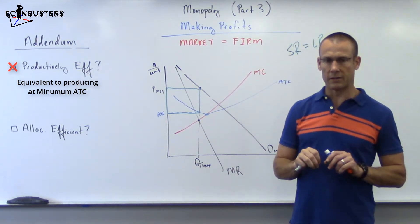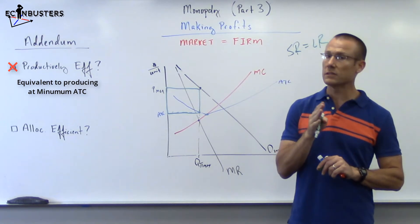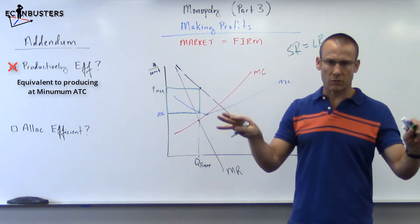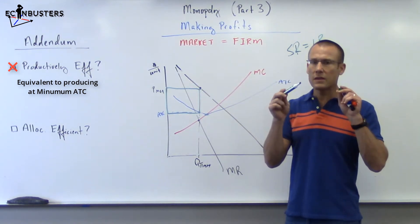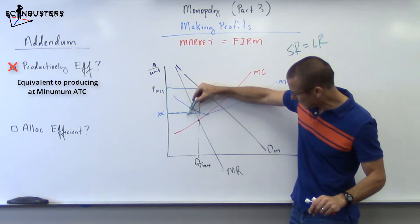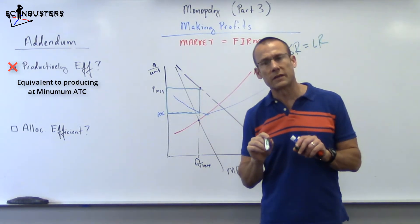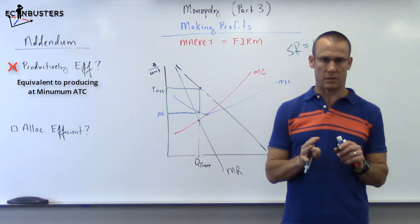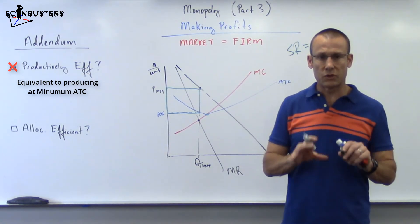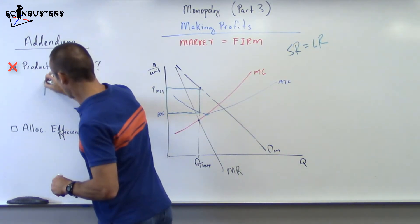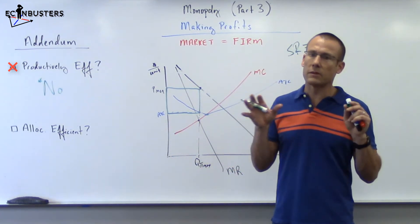Now, a little caveat: is it even possible for a monopolist ever to be productively efficient? The answer is actually yes, but only by the most random of chance. There's nothing in the market driving us there. It would only happen if we drew the ATC line so it hit exactly where MR and MC are intersecting. There's nothing pulling us to being there. So productively efficient — no, with a small asterisk: yes, maybe by random chance, but for the most part a monopoly is not going to be productively efficient.